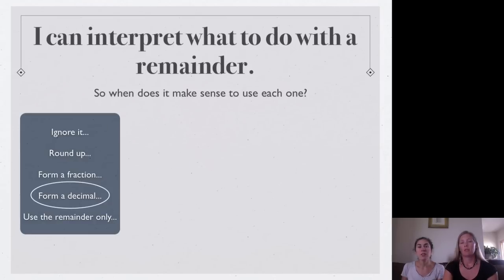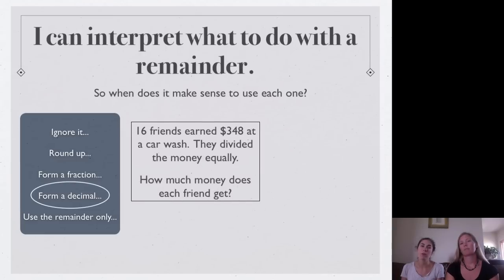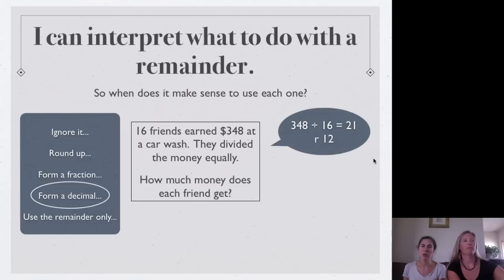So, now we're going to talk about a decimal. And I think this one is so important. Whenever you're dealing with money and you have a remainder, you have to change that into a decimal. And we'll talk about how to do that. So here we have 16 friends and they earned $348 working at a car wash. So, they are dividing that money equally.